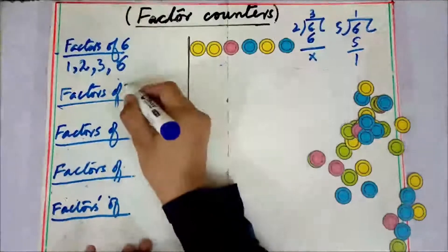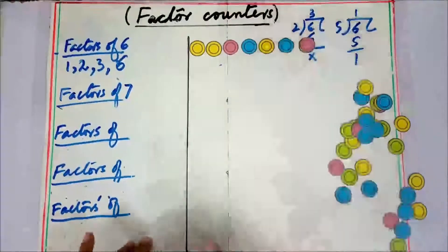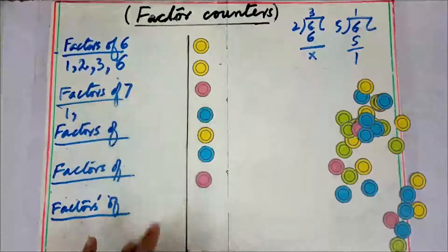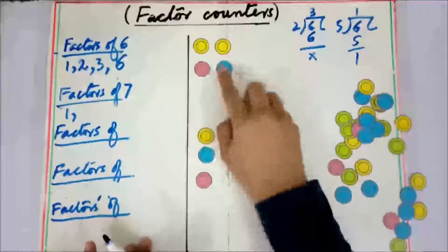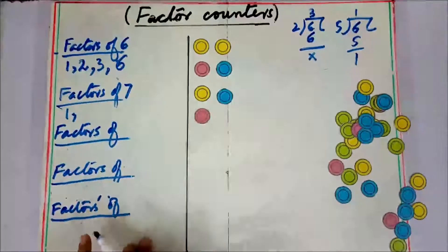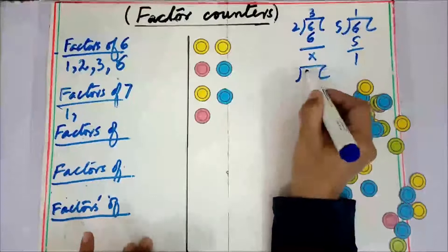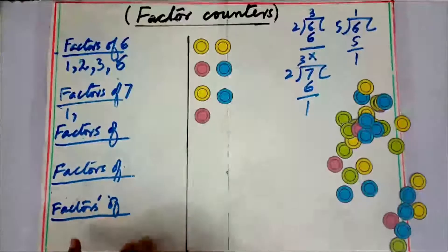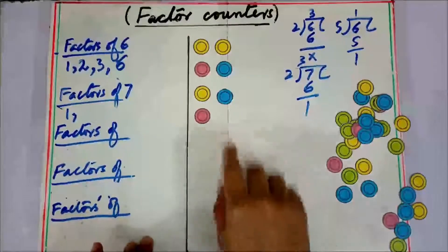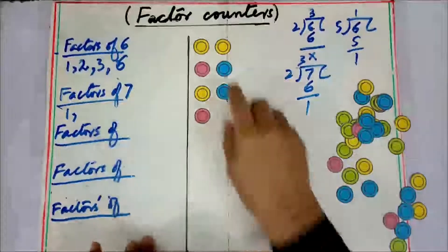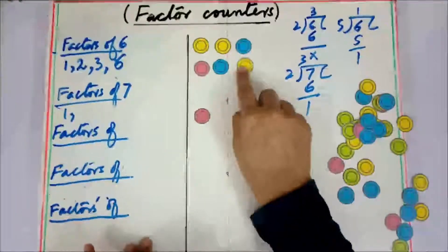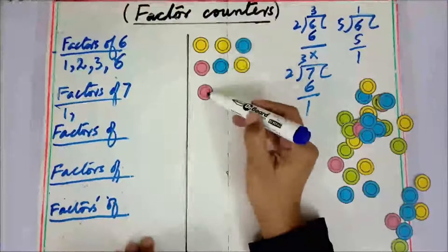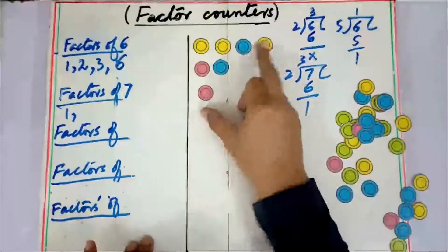Now we find the factors of seven — I take seven counters. First, dividing into groups of one: one is a factor. Dividing into groups of two: there are three groups with one remaining — seven divided by two gives three remainder one, so two is not a factor of seven. Dividing into groups of three: three is also not a factor of seven because there is one remainder.